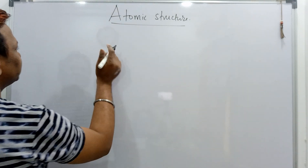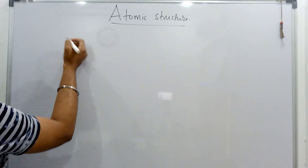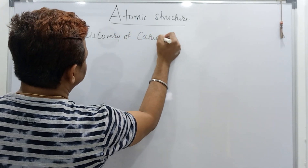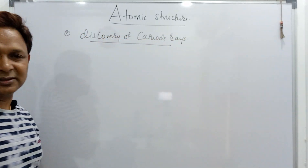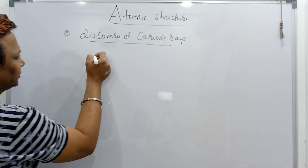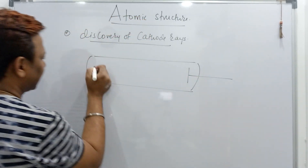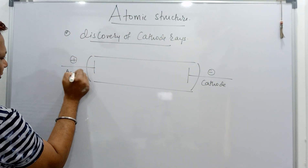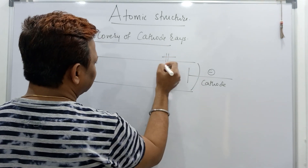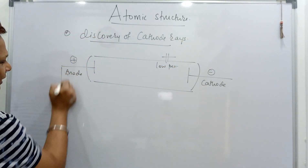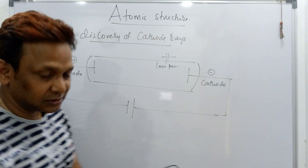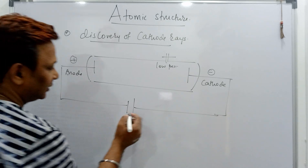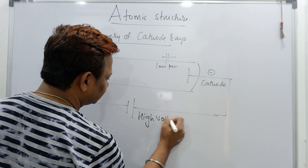The first part is the introduction — discoveries of particles. In our NCERT they have covered discoveries of cathode rays. In the discharge tube we have a cathode plate, which is a negatively charged plate, and an anode plate, which is a positively charged plate. Gas is present at low pressure and we send a high voltage of current through it.